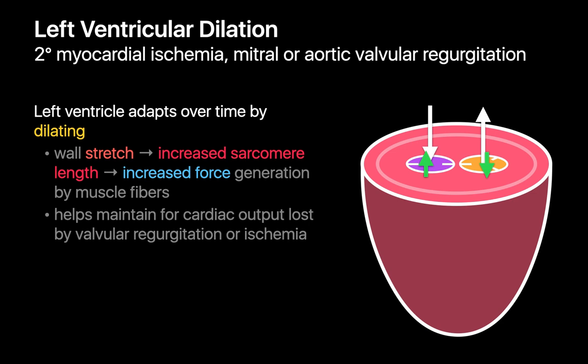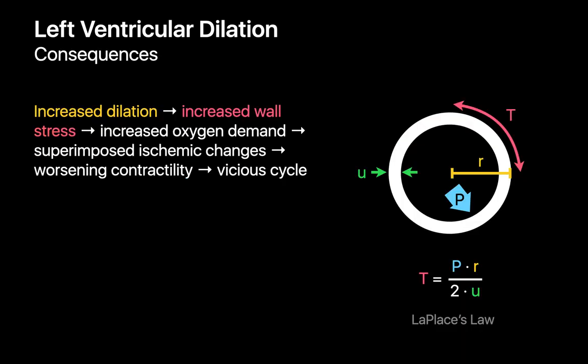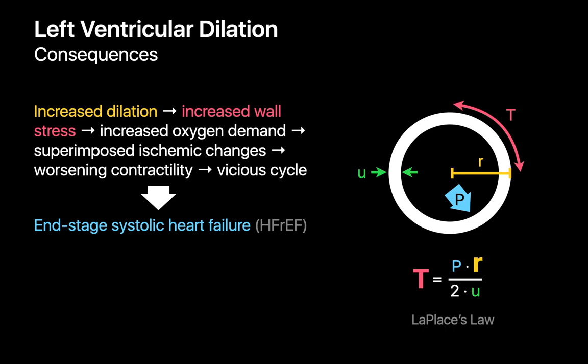However, as with left ventricular hypertrophy, left ventricular dilation does not come without unwanted side effects. Referring again to Laplace's law, increased chamber dilation R is directly associated with increased wall stress T. Additional effort exerted by the myocardial wall heightens oxygen demand, increasing the risk of a catastrophic ischemic event and restricting left ventricular contractility. If the response to decreased contractility is another round of left ventricular dilation and sarcomere stretching, a vicious cycle of worsening left ventricular heart failure unfolds. Since the immediate cause is insufficient contractility during systole, we refer to this as systolic heart failure or heart failure with reduced ejection fraction.